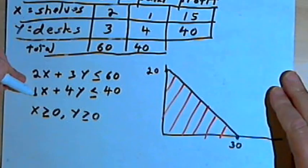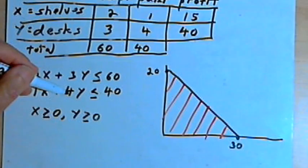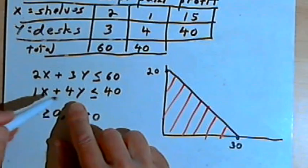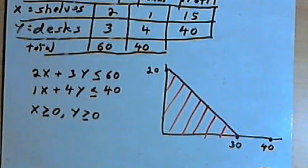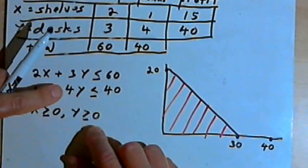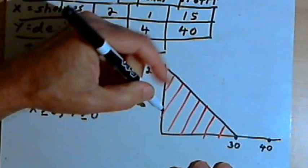Now we do the same procedure for the second inequality. I've got 1x plus 4y is less than or equal to 40. So to find the x-intercept, I'll have y be 0, which means it's just 1x equals 40. So the x-intercept is going to be at 40. For the y-intercept, I'll make x into 0, so I've just got 4y equals 40, which means y would equal 10.